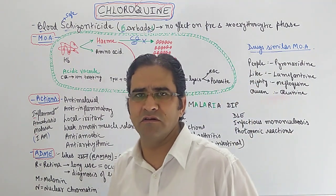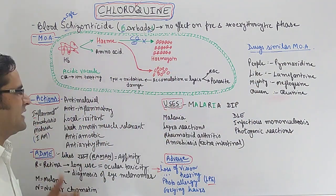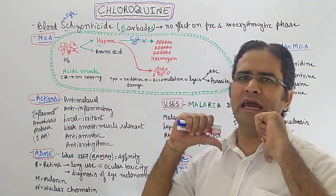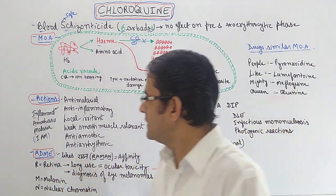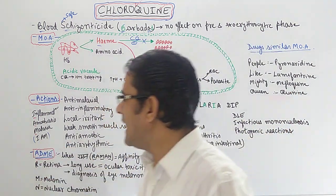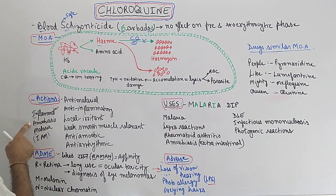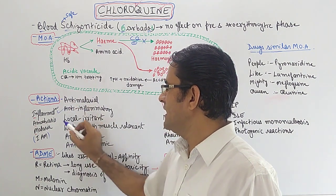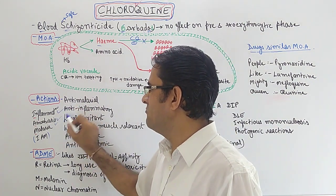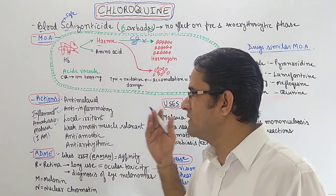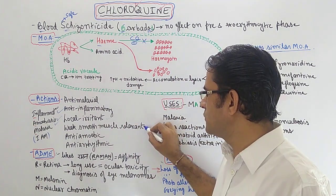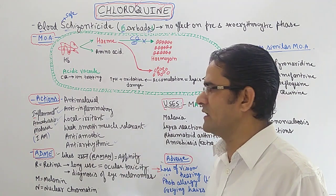Now for the actions of chloroquine, remember the mnemonic 'I AM': I stands for anti-inflammatory, A stands for anti-amoebic, and M stands for anti-malarial. So three important actions to remember. Apart from these, there are also local irritant action, weak smooth muscle relaxant action, and anti-arrhythmic action, but the most significant ones are covered by 'I AM'.